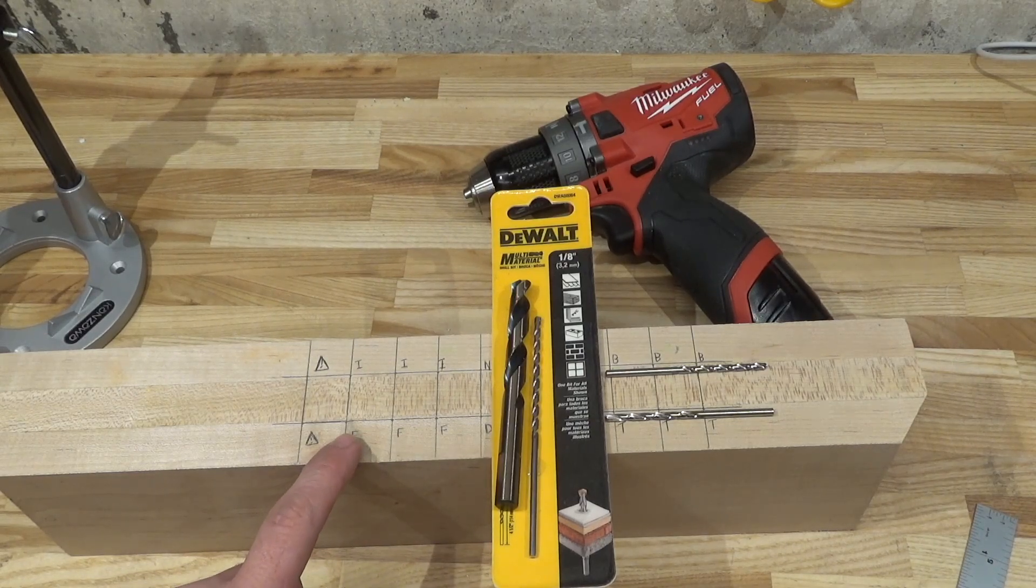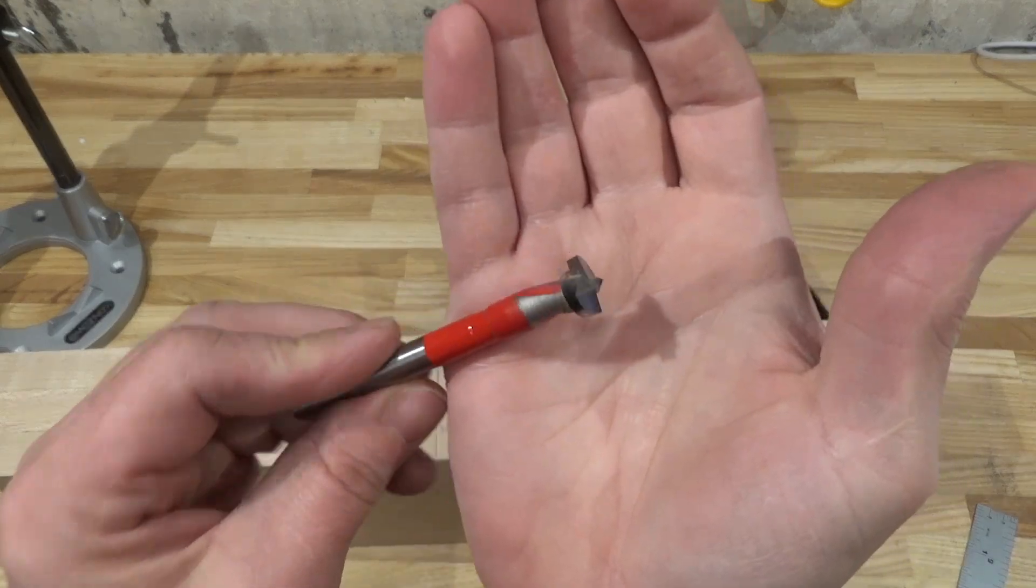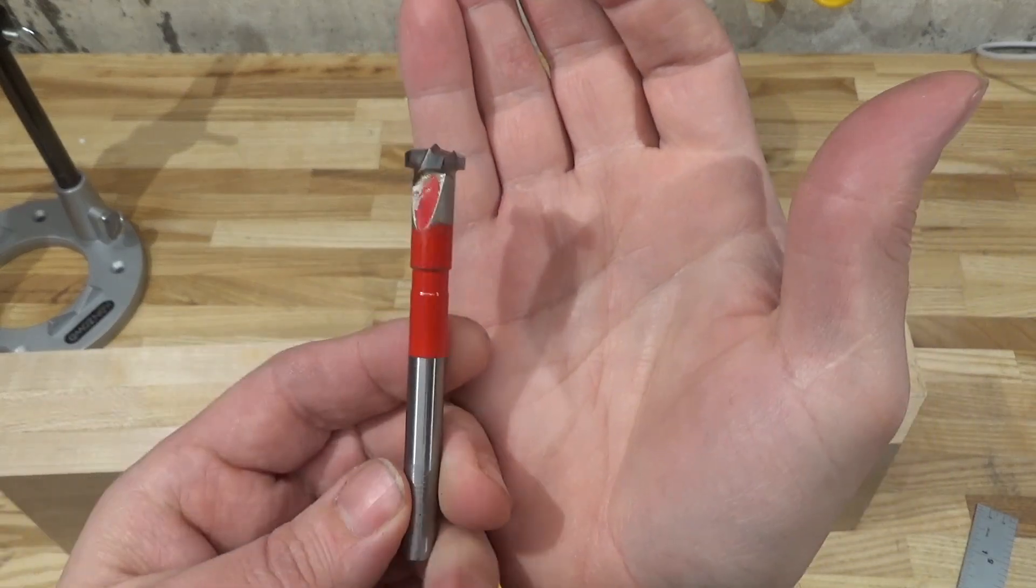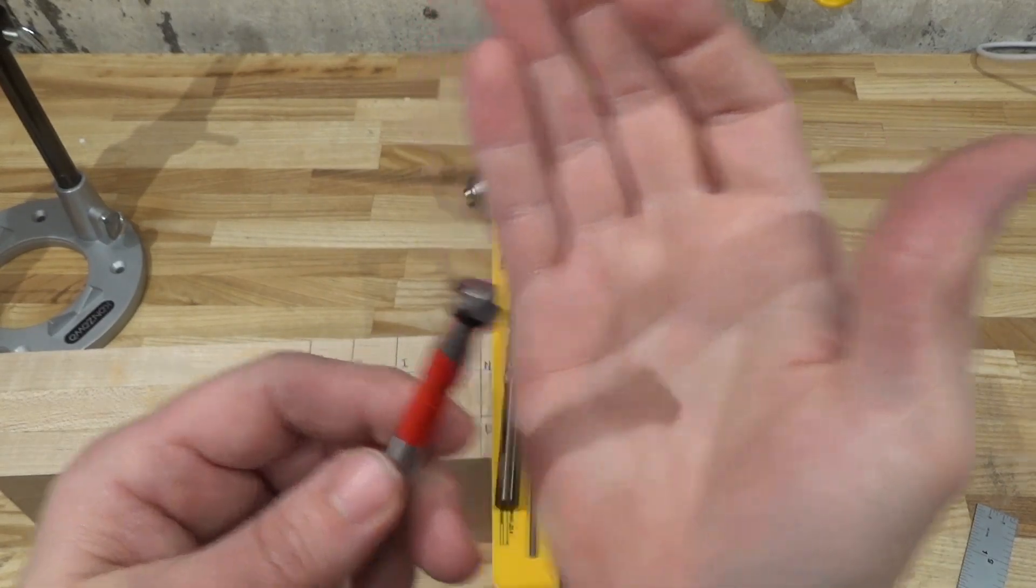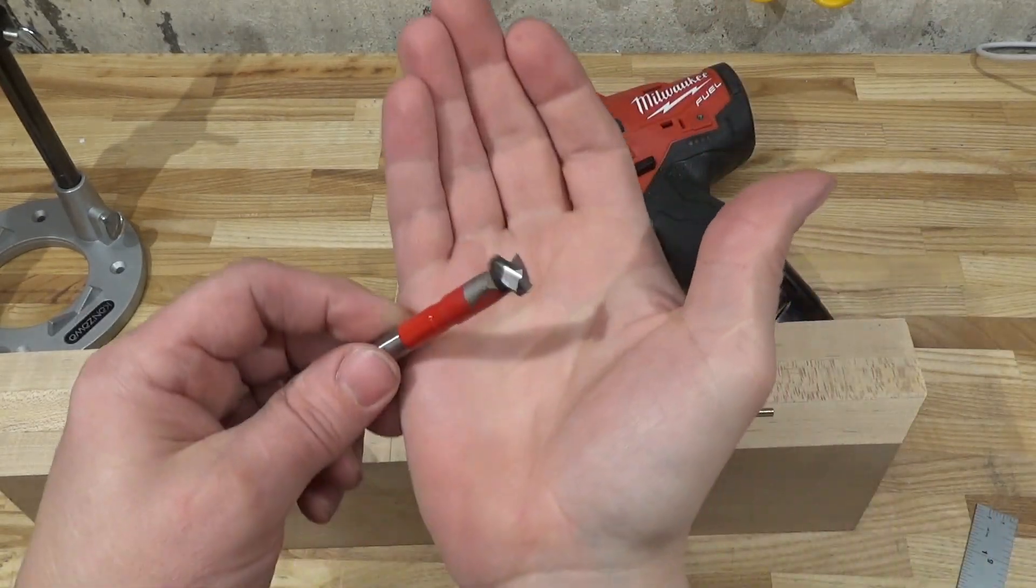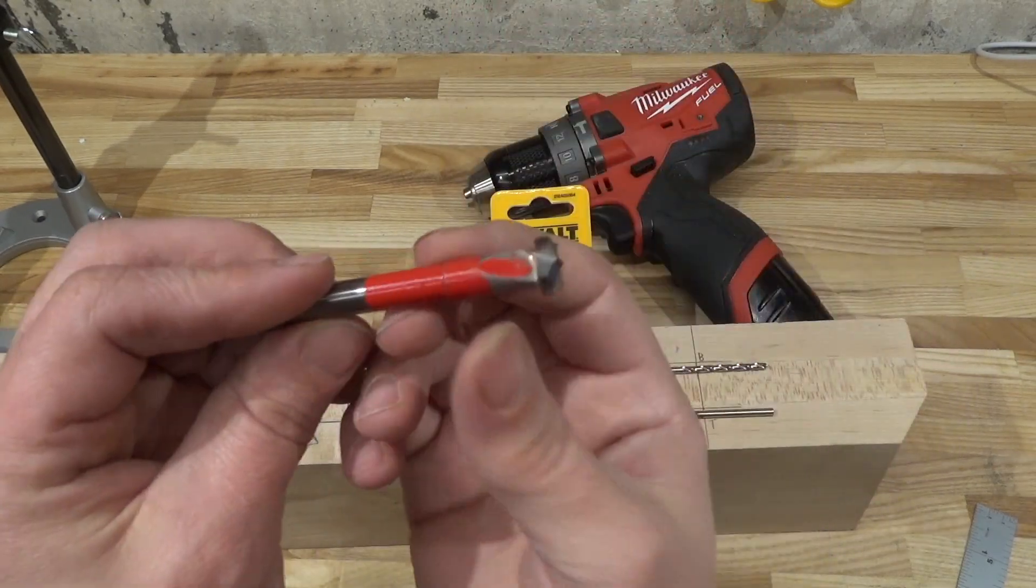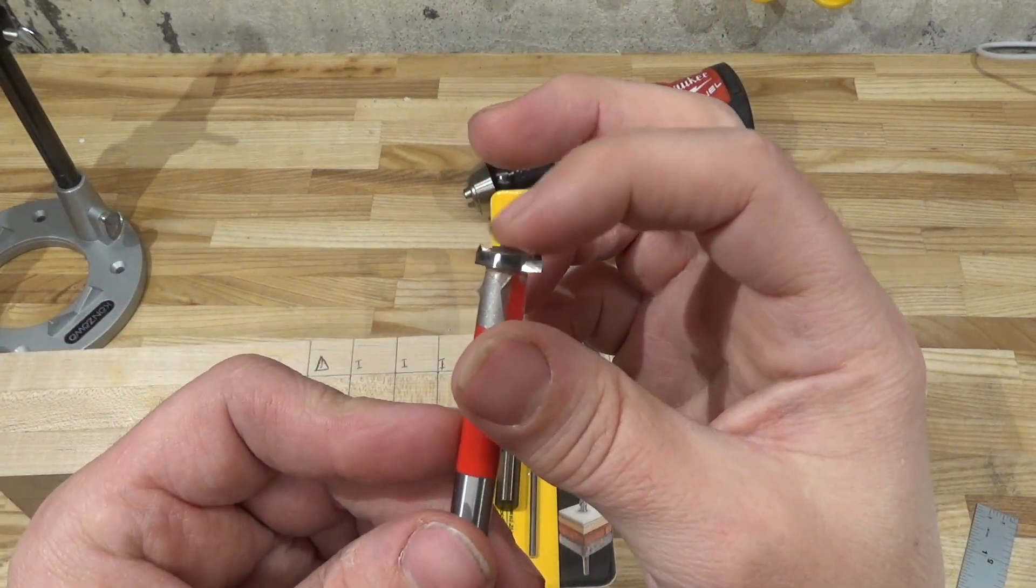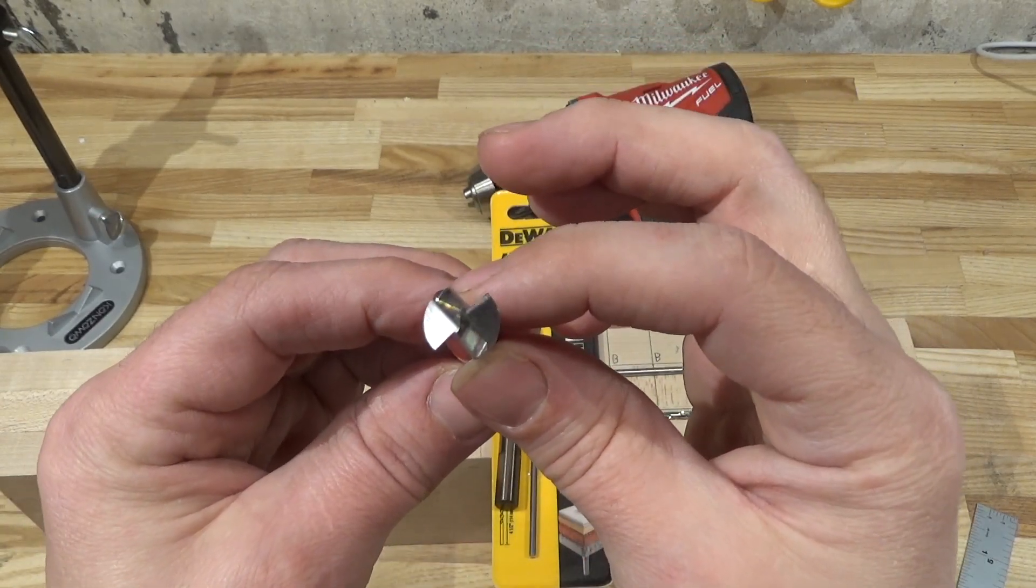Next up, I got three holes marked F, and F will be for the Freud Forstner bit. This one is also three-eighths—no, this is one-half inch in size, one-half of an inch in size.